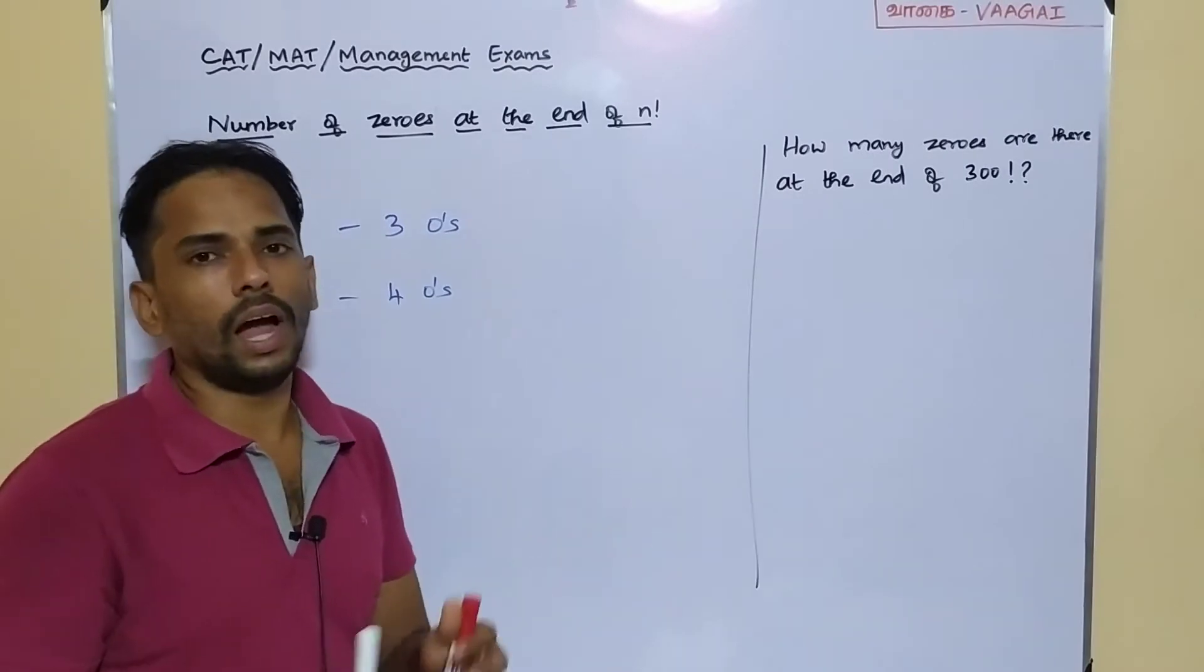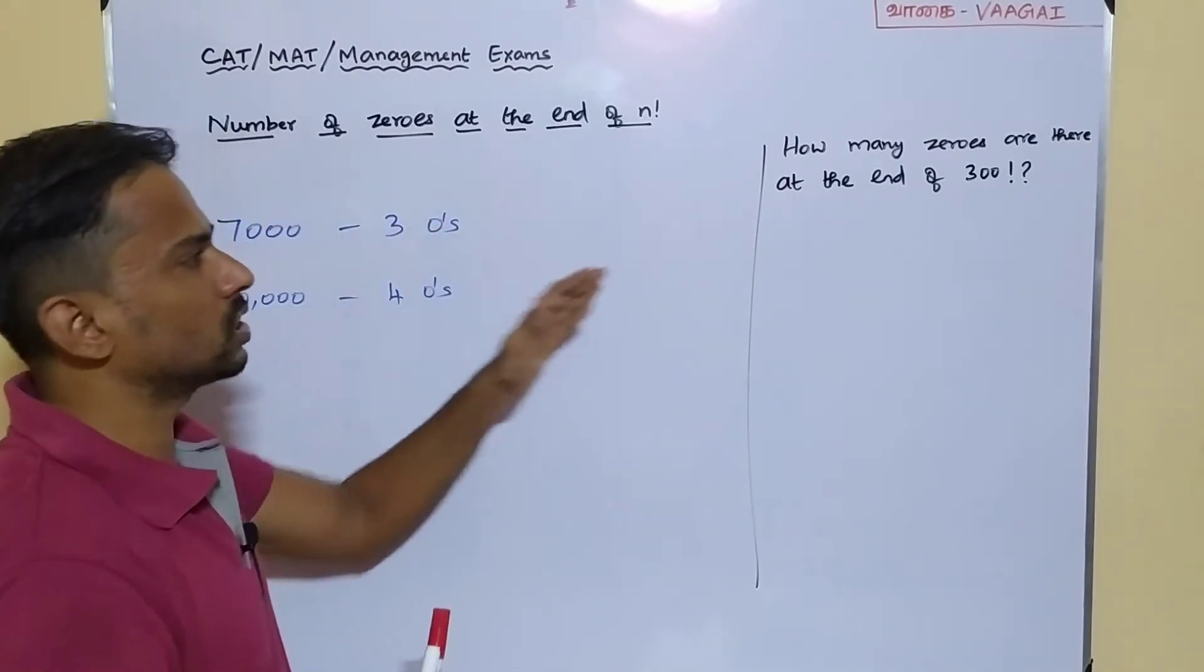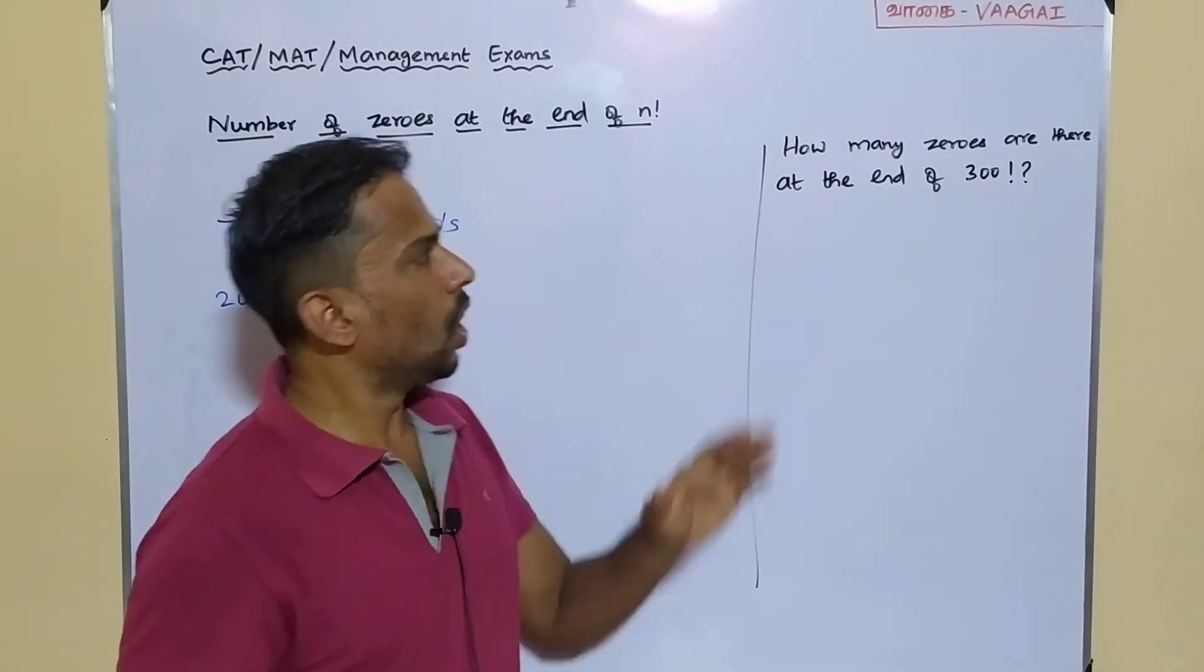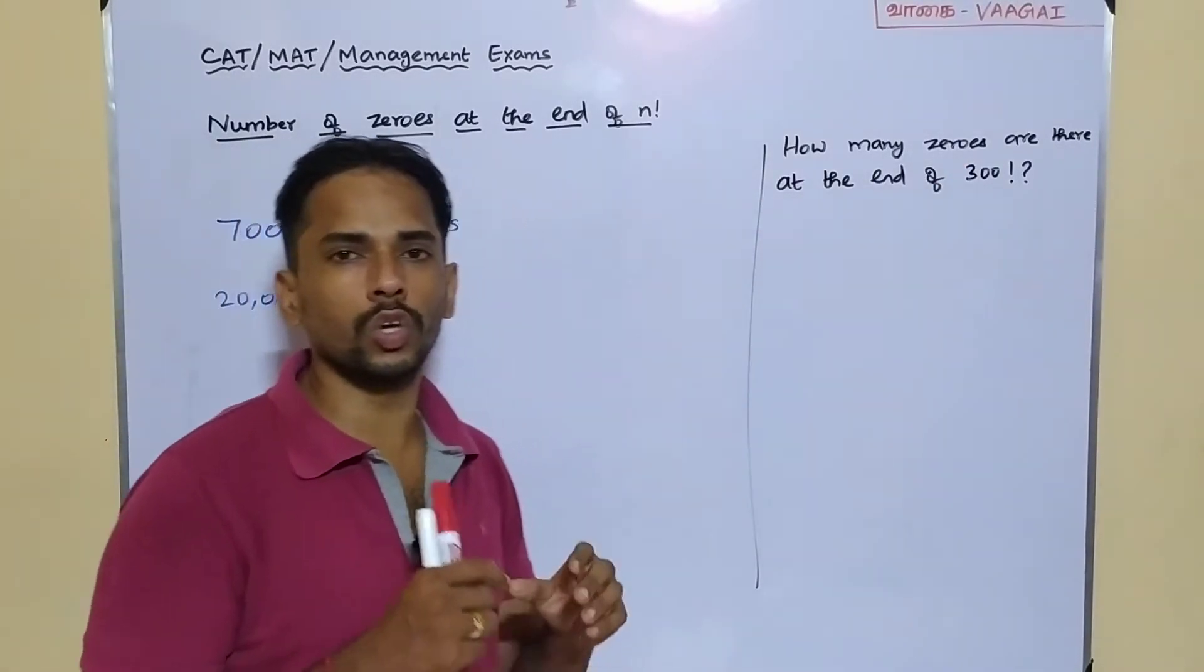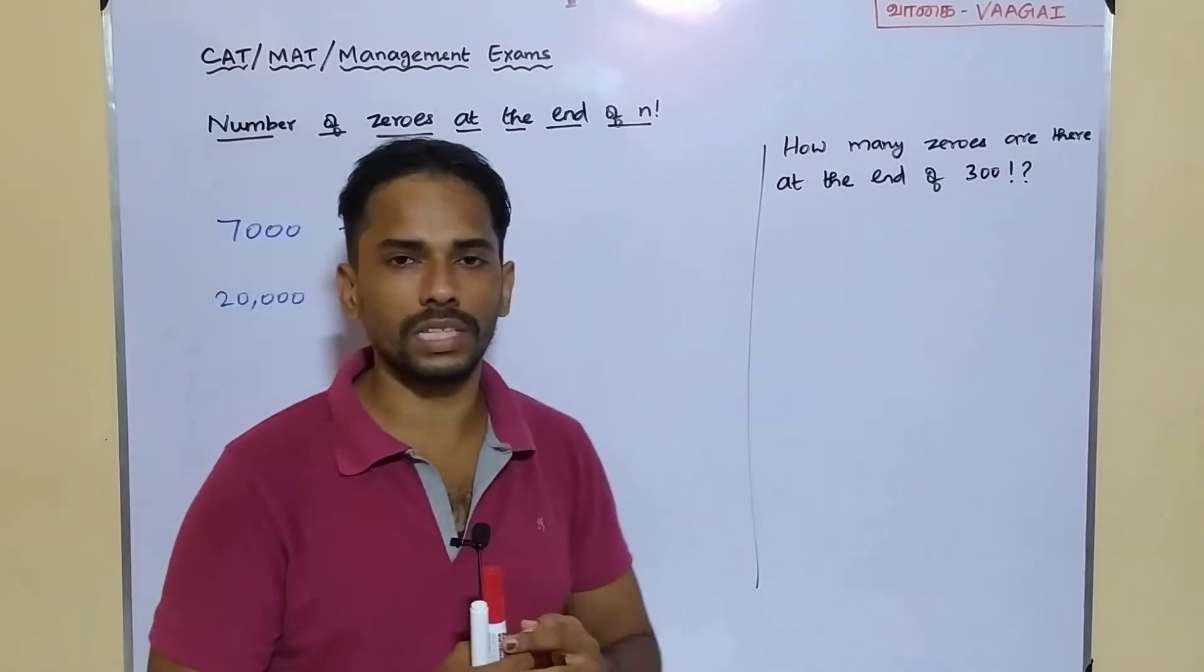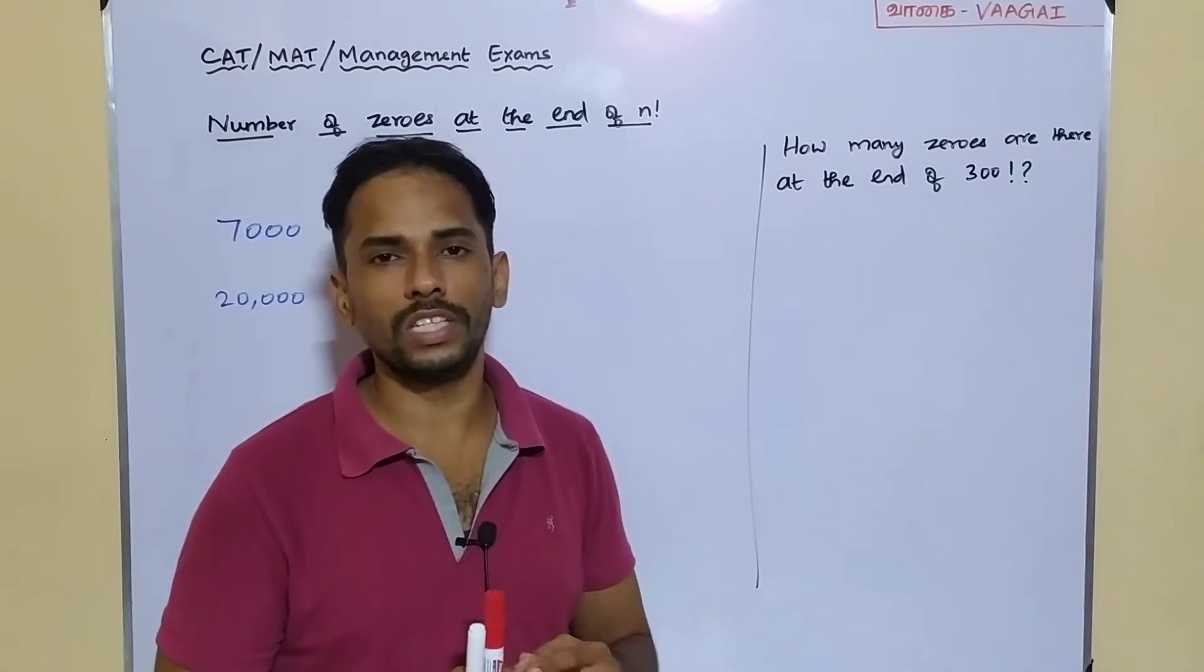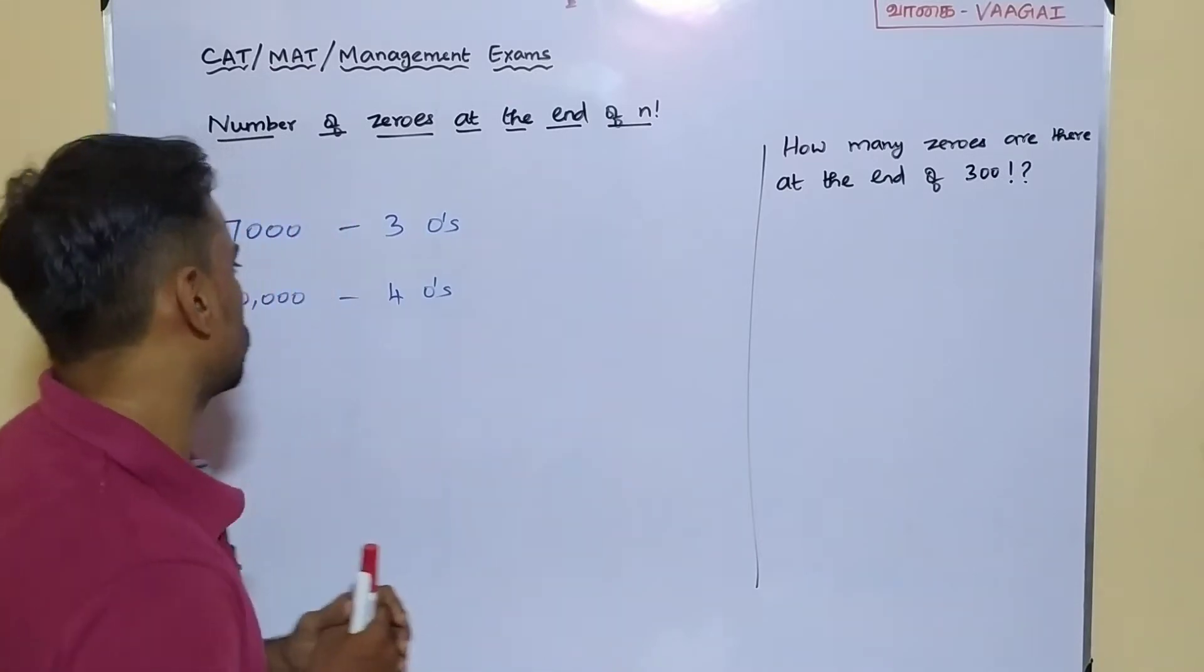So the number of zeros your value is going to end up with, that is called the number of zeros. That's what we are going to find here. Based on this concept, here we have got a problem: how many zeros are there at the end of 300 factorial? You may wonder how we are going to find this, and it's going to be a very easy process once you learn the concept.